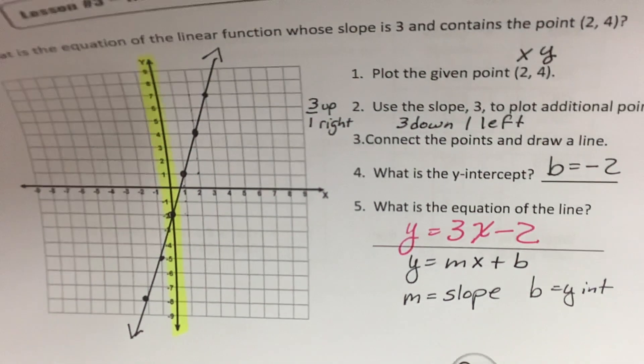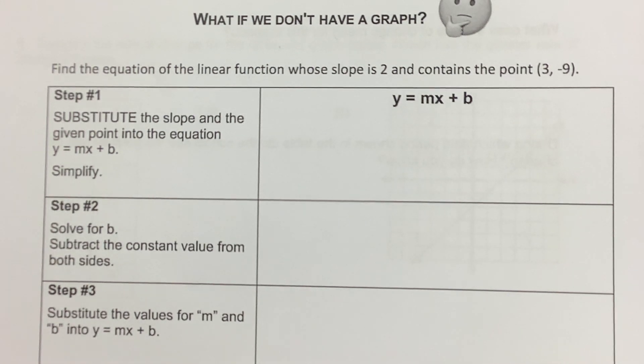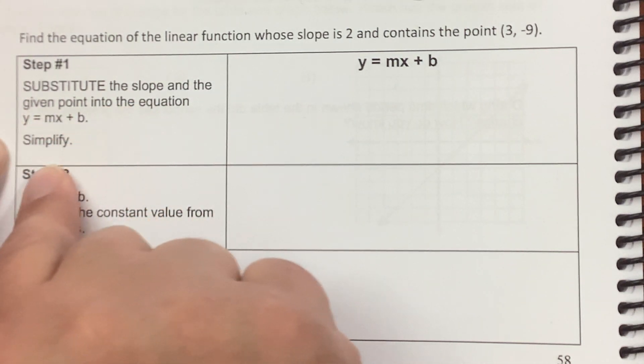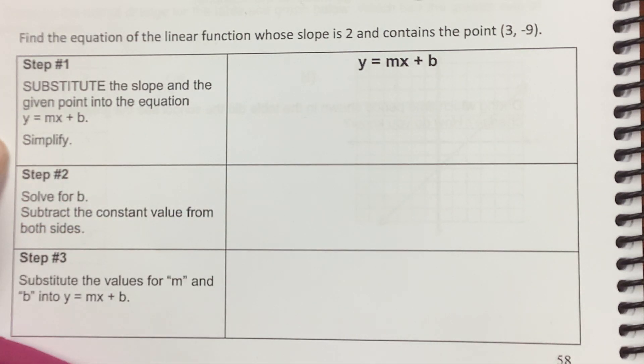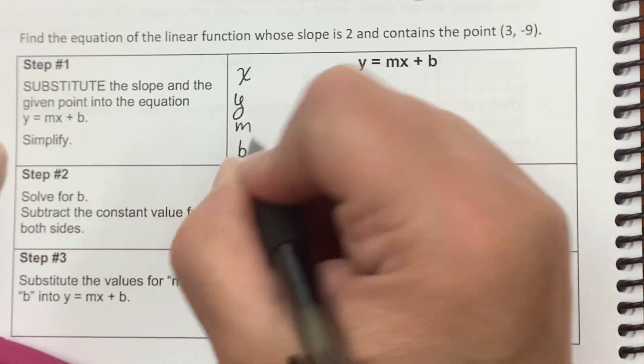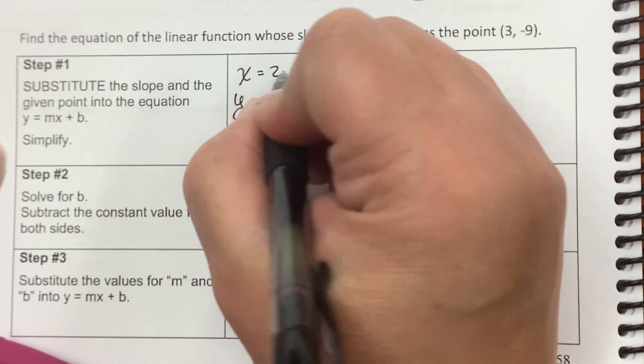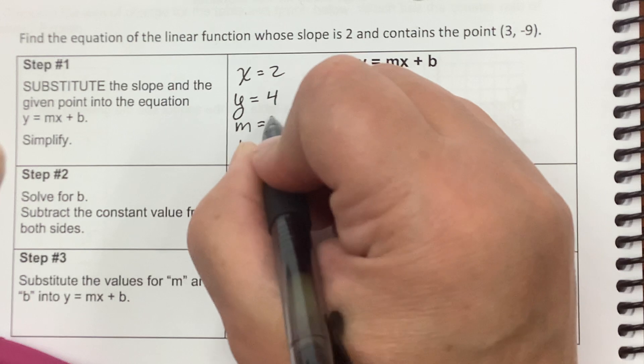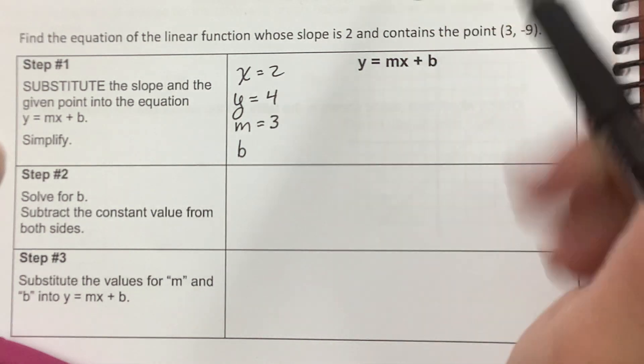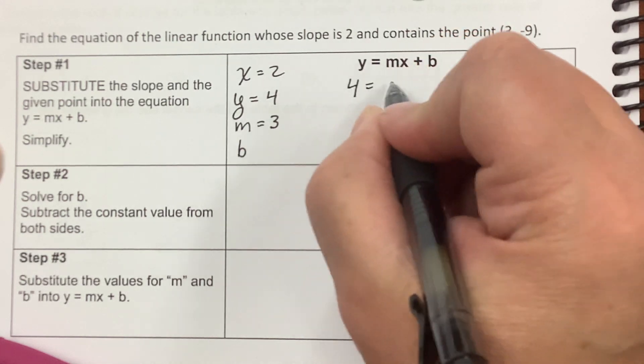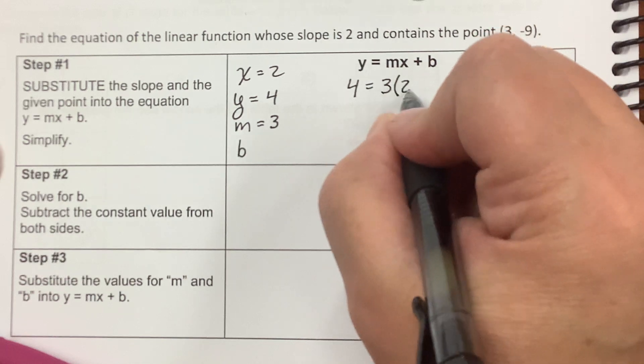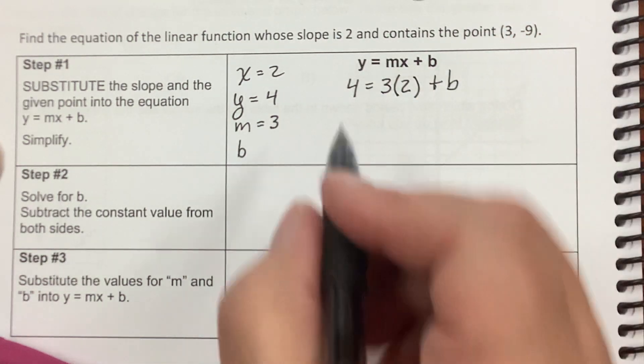All right. Now, what if we don't have a graph? Well, it's not that bad. We're going to follow some directions here. First, substitute the slope and the given points into the equation y equals mx plus b. What I like to do is I like to identify all my pieces. I have to know my x and my y and my m and my b. So my x from up there was 2. My y is 4. My m is 3. And b is what I'm looking for.